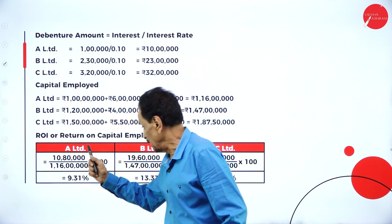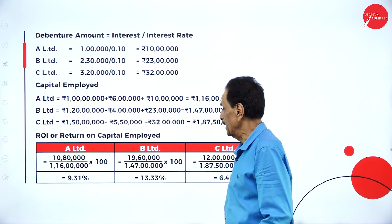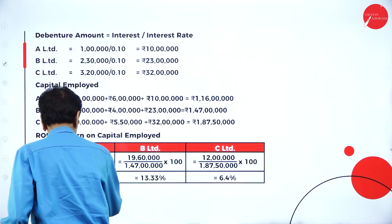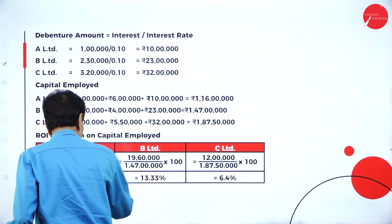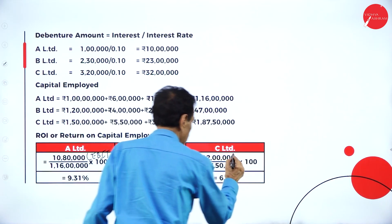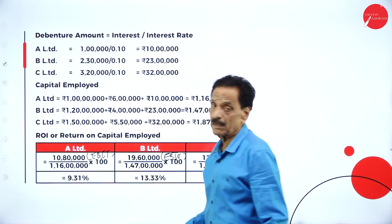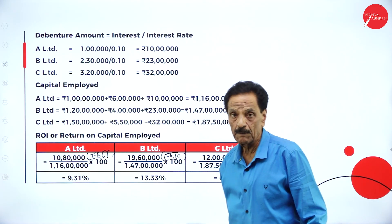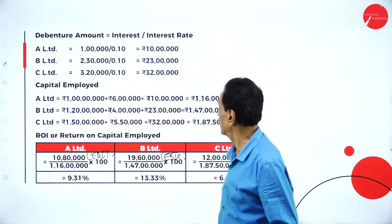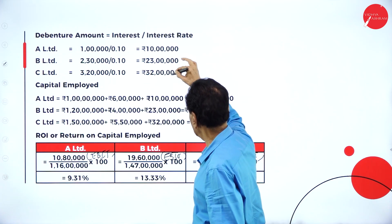Capital employed = equity share capital plus preference share capital plus debenture. EBIT — earning before interest and taxation — divided by total capital employed (equity share capital plus preference share capital plus debenture). Return on equity or return on capital employed is one and the same.